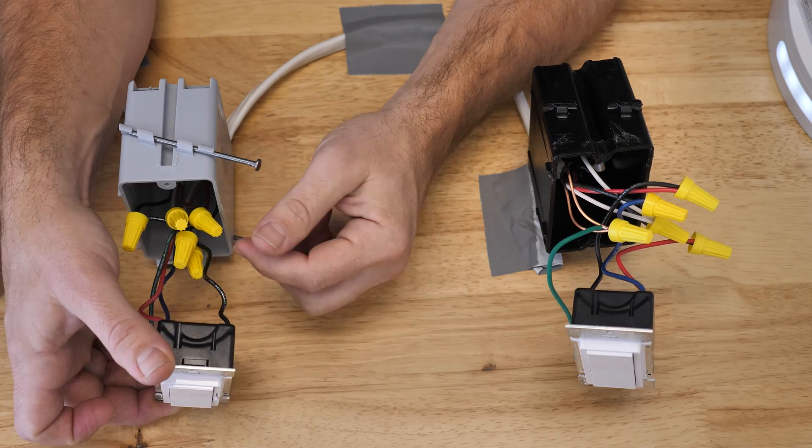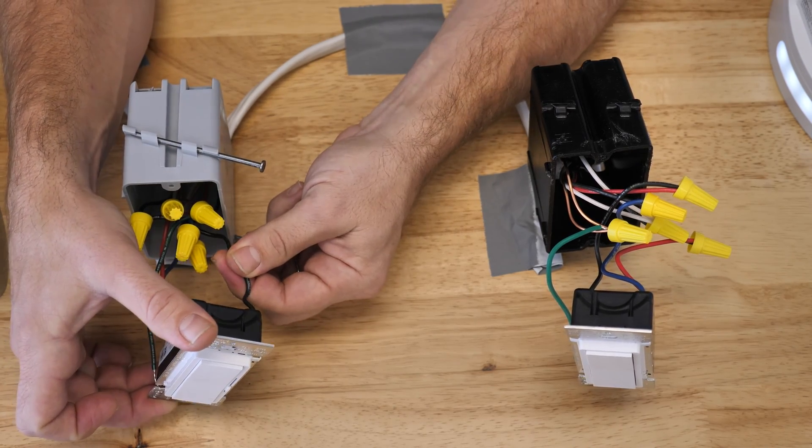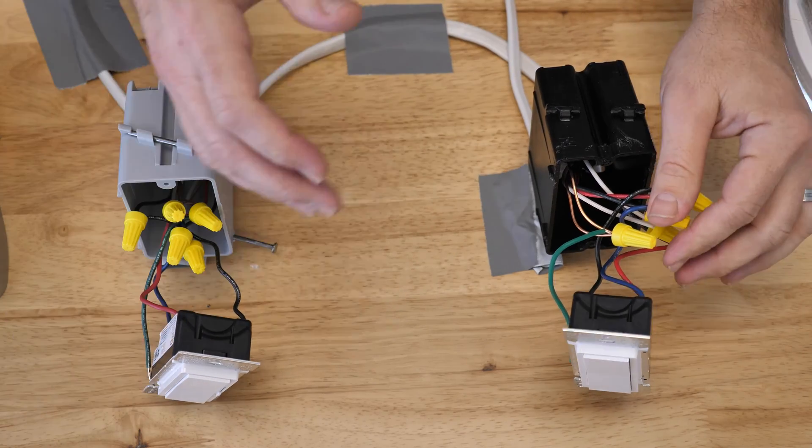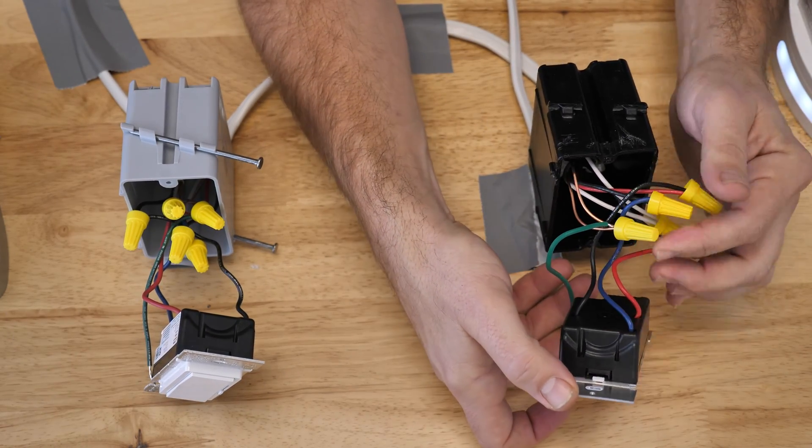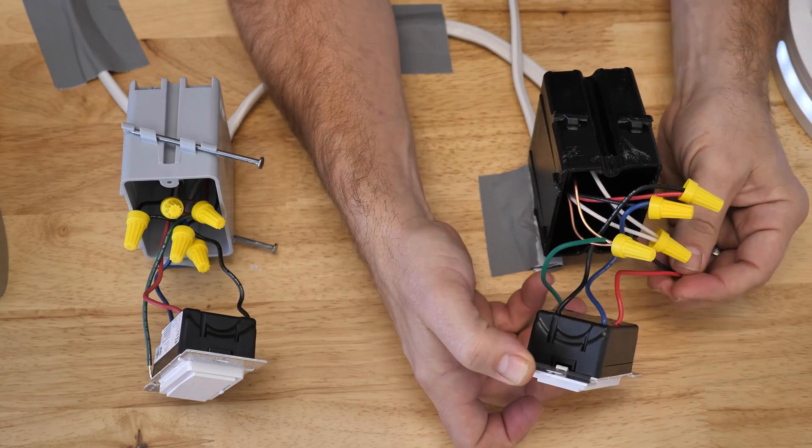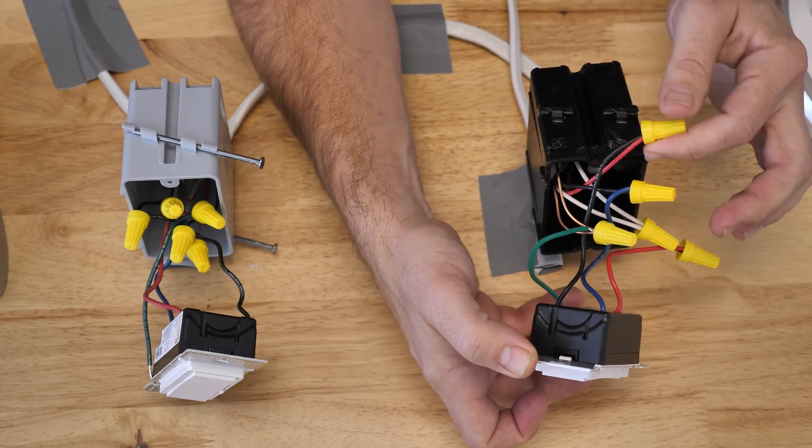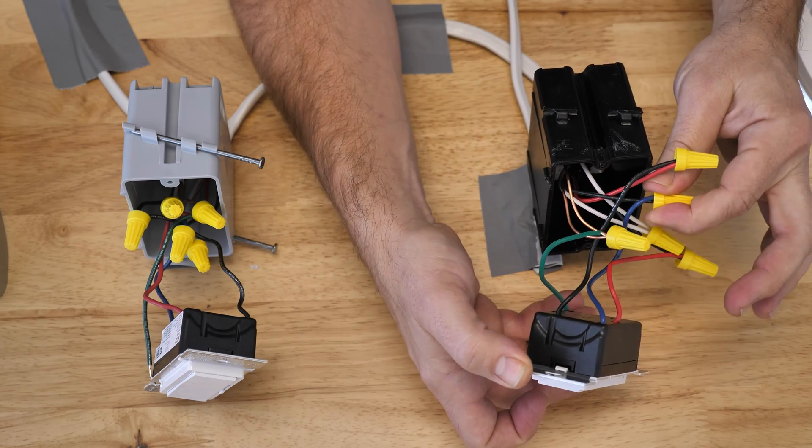To use it as a three-way, you're going to notice that we use our black as our power coming in, and our red and our blue become our travelers to our other switching location, which we will just match on the other side. In this particular application, we use black to tie the red, and we used red to tie with the black feed, and then we did a black with the blue.